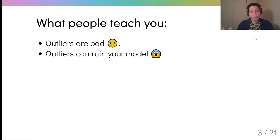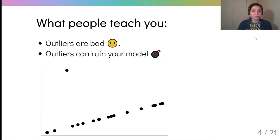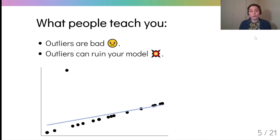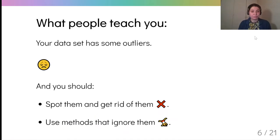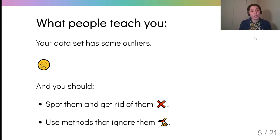What people teach you about outliers is that they are bad and that they can ruin your model. So you think about them as a bomb that will explode your model when you fit it to your data. Then once you know that your dataset has some outliers, you will be sad and you should spot the outliers and get rid of them, or use methods that ignore them.